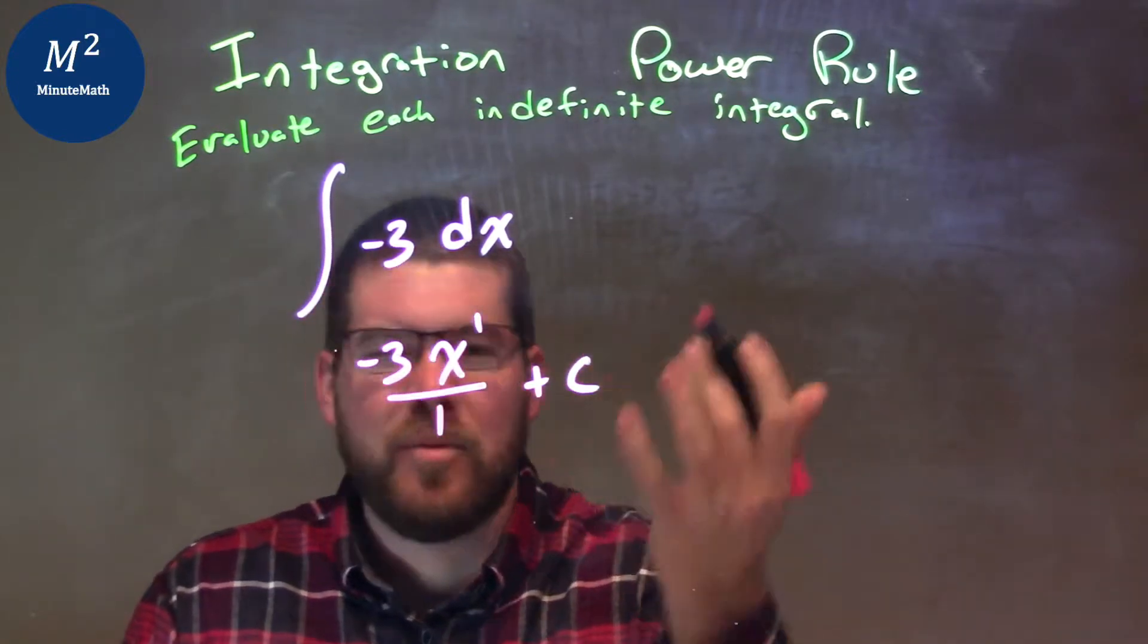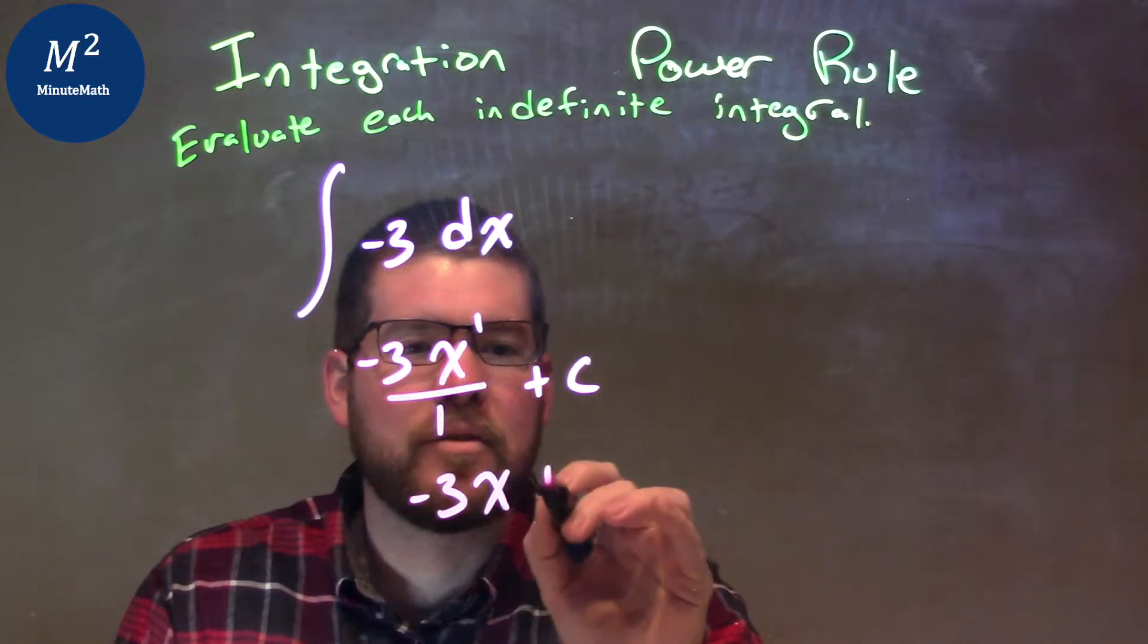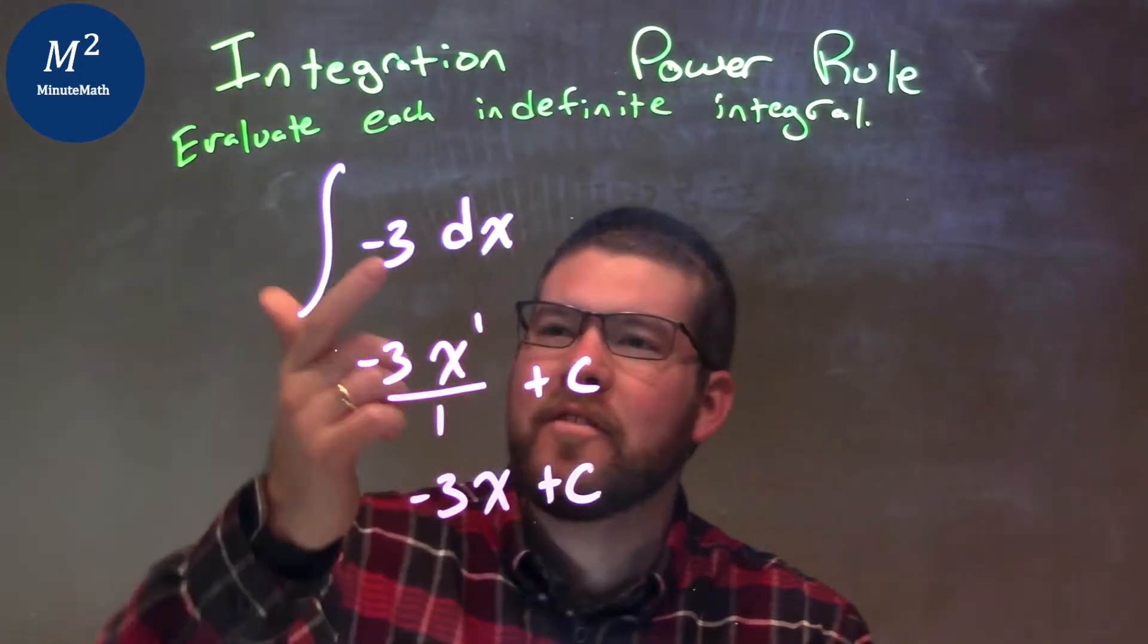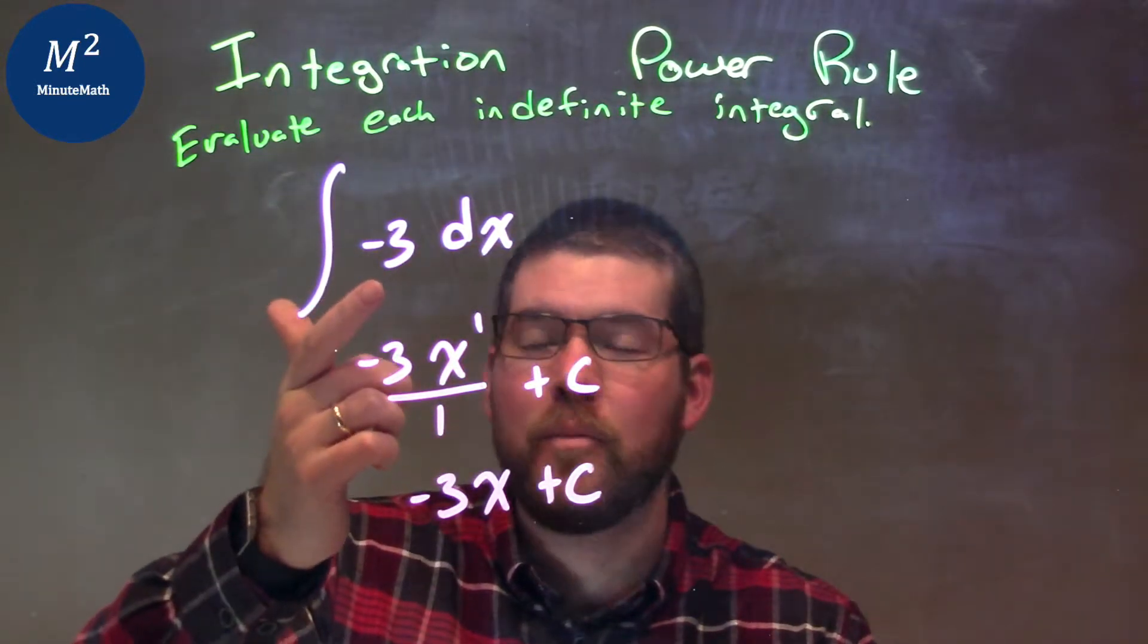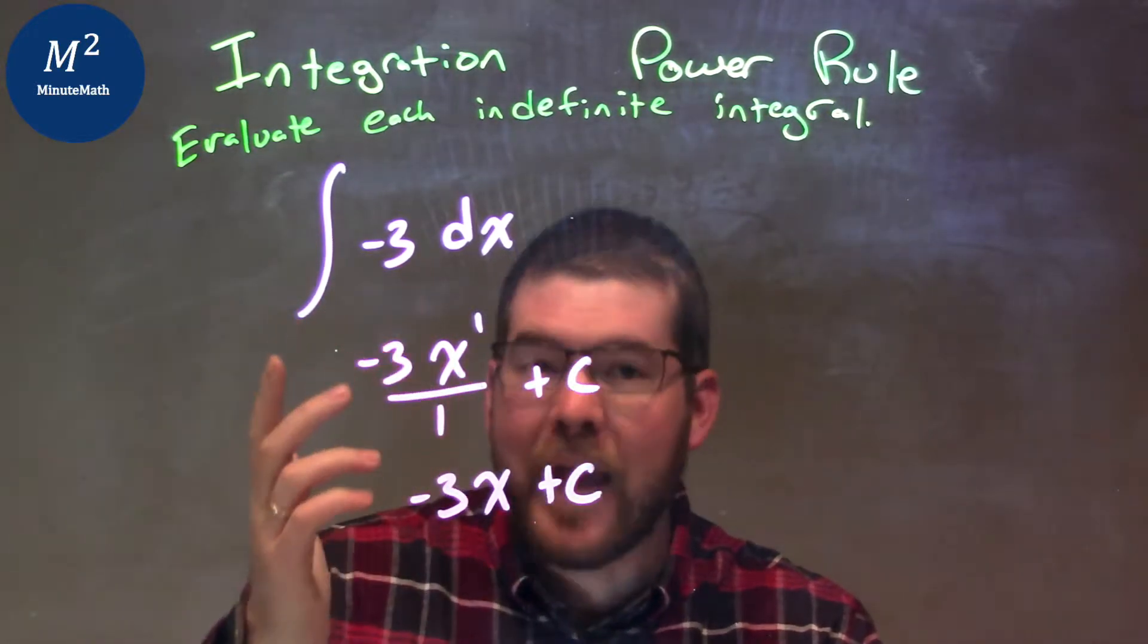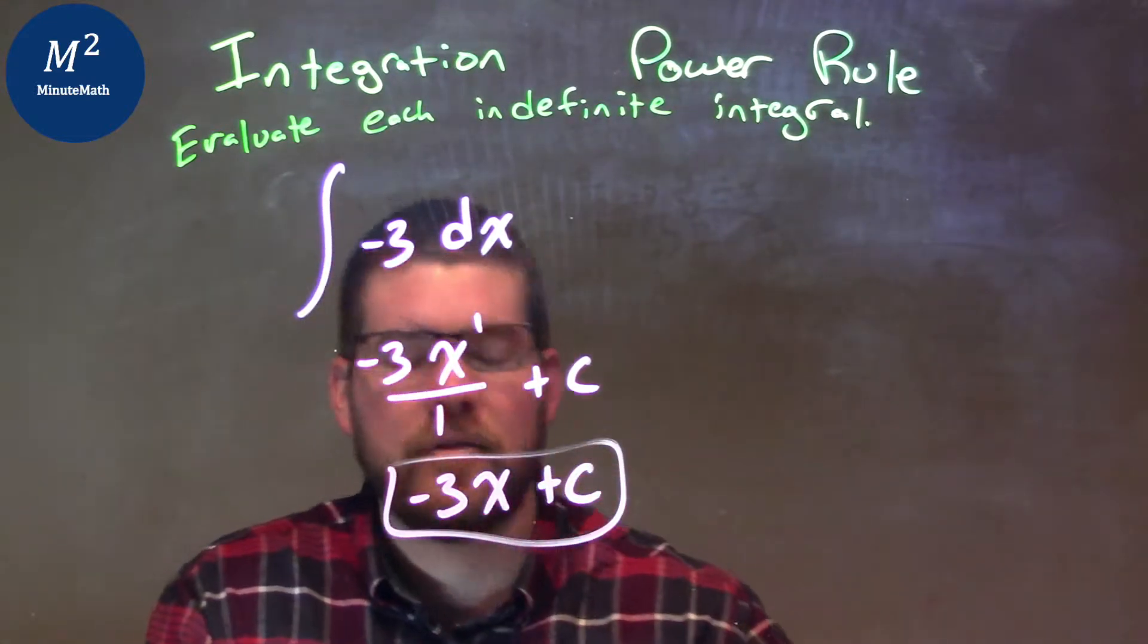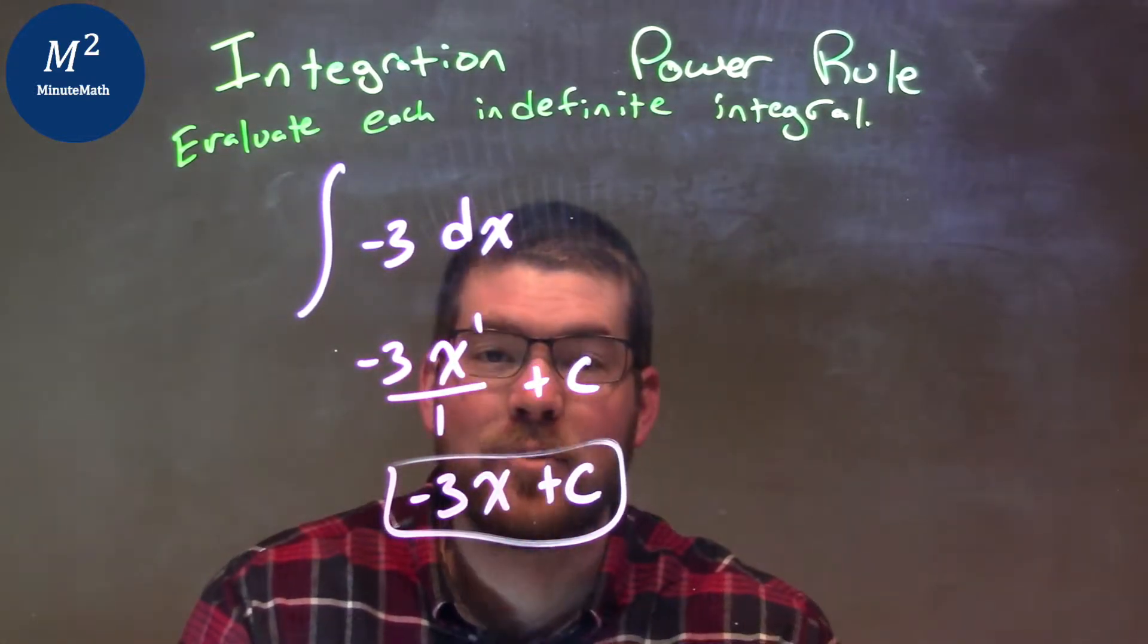Now, since we're dividing by 1, it's simply negative 3x plus C. Whenever we have a constant and we need to integrate just the constant part, we can just add the x to it. Don't forget plus C. So our final answer is negative 3x plus C.